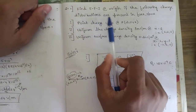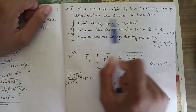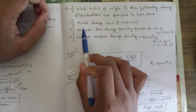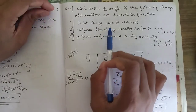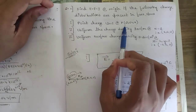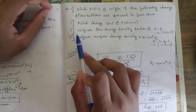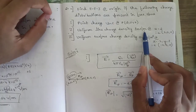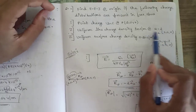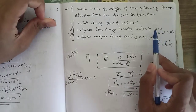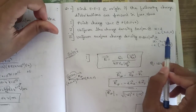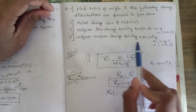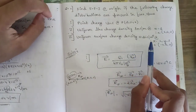The next question asks to find electric field intensity E at the origin given the following charge distributions in free space: first, a point charge of 12 nanocoulombs at P equal to (2, 0, 6); second, uniform line charge density of 3 nanocoulombs per meter at (2, 0, 0); third, uniform surface charge density of 0.2 nanocoulombs per meter squared at (−2, 3, 0).